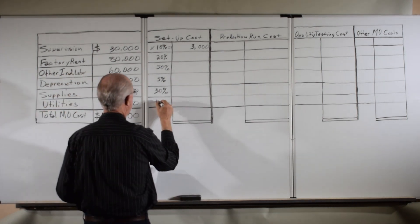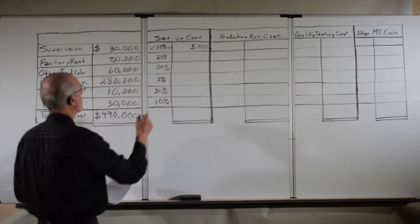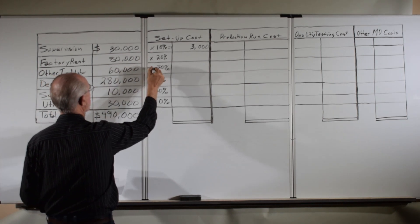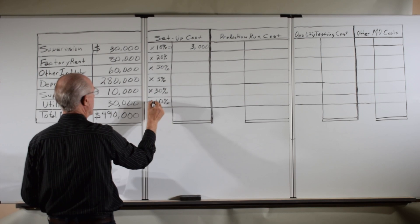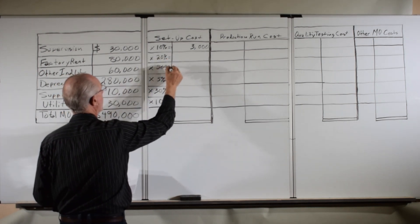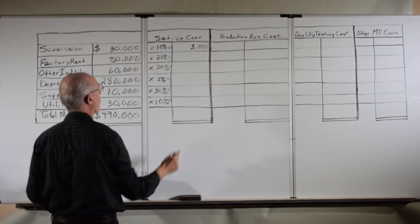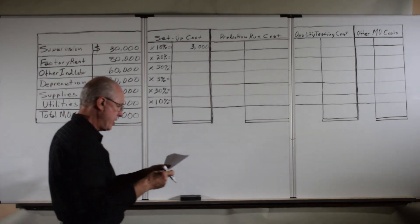Of the supplies, they're using quite a bit, 30% of the supplies are used for setup. And utilities, they're only using 10% of the utilities. Then we're going to multiply each of these by the cost. So I'll put a little multiplication sign here to let us know we're going to multiply, and that will equal the amount of cost attributable to setup. We do the same thing for production run costs.